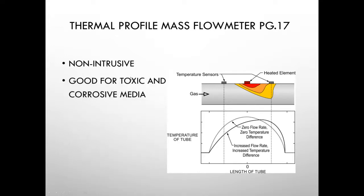Here is a non-intrusive version of the thermal mass flow meter, with temperature probes mounted on the outside of the pipe and a heating element in the middle. With no flow, the heat bubble is symmetrically distributed between the two sensors. As gas flow develops, it cools one sensor, strips heat away from the element, which heats the second element. This non-contact application is good for toxic and corrosive mediums.